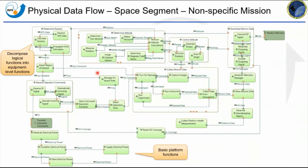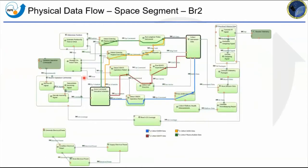The physical architecture step is the most important. We decompose those logical functions into functions that the equipment on board the spacecraft will perform. For the non-specific mission model I listed basic functionalities common to many CubeSat missions, then decomposed them into what equipment is commonly on board CubeSats. We allocate functions to each piece of equipment — it's an iterative process: as you decompose you see more equipment to add, then you define functions for them. This shows the data flow for the CBR2.